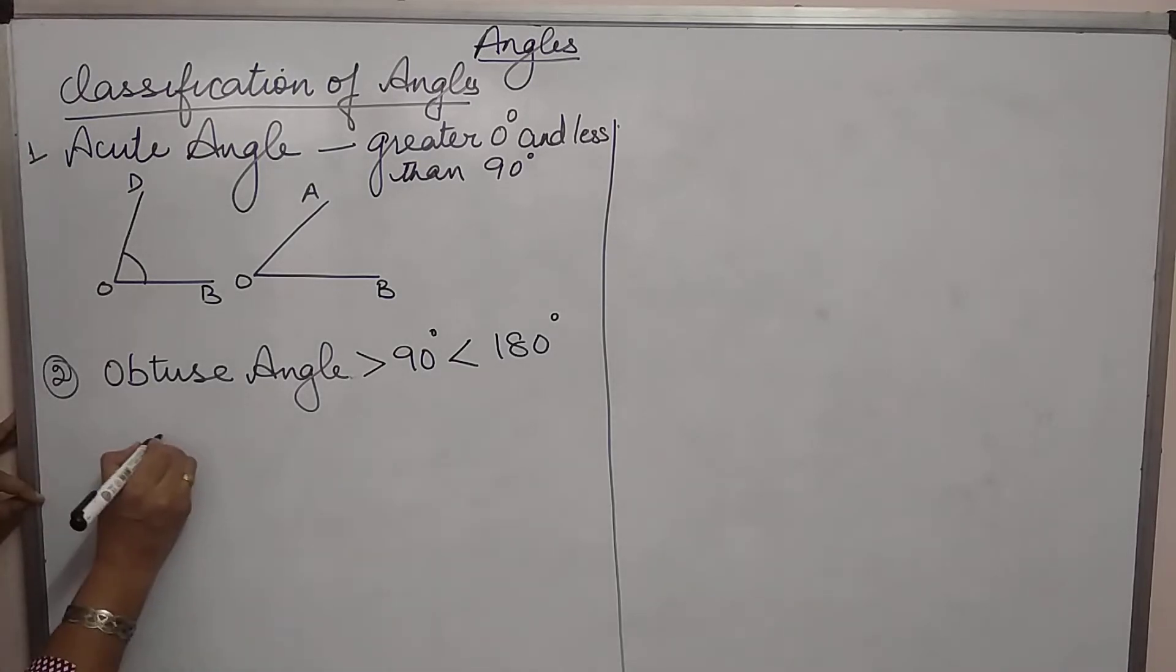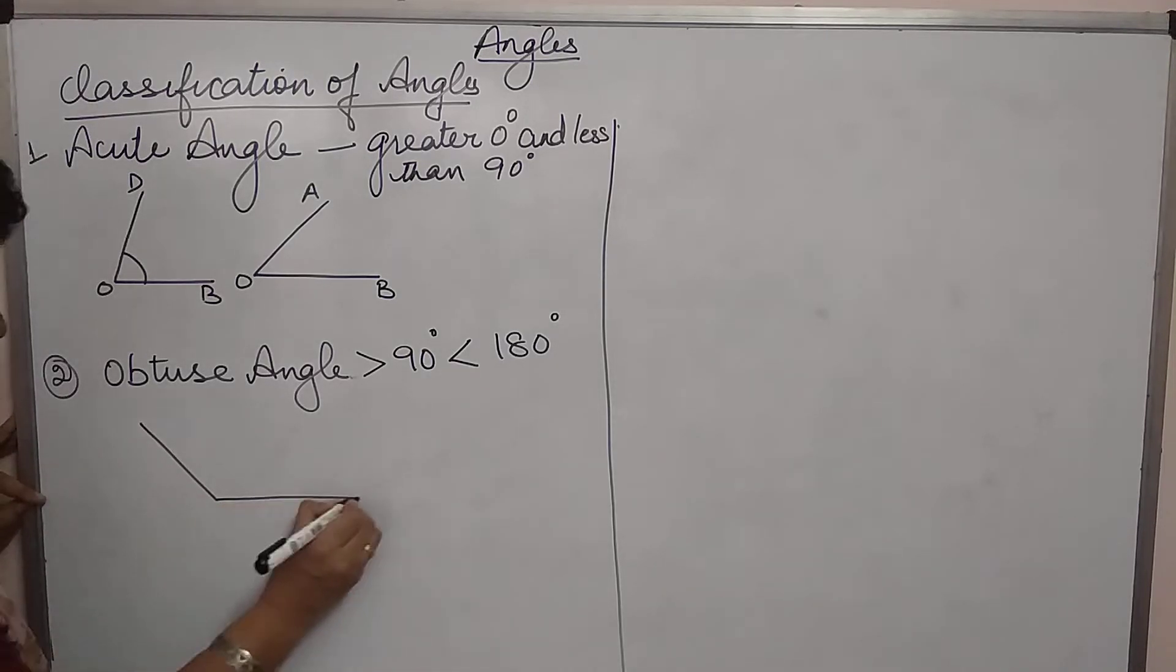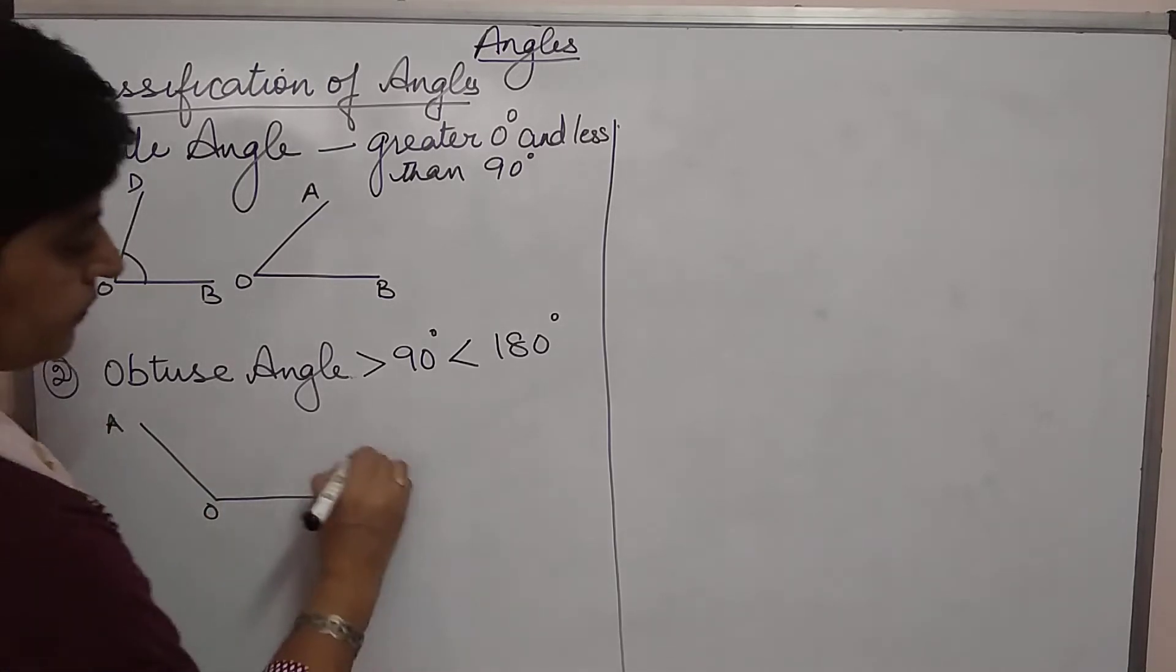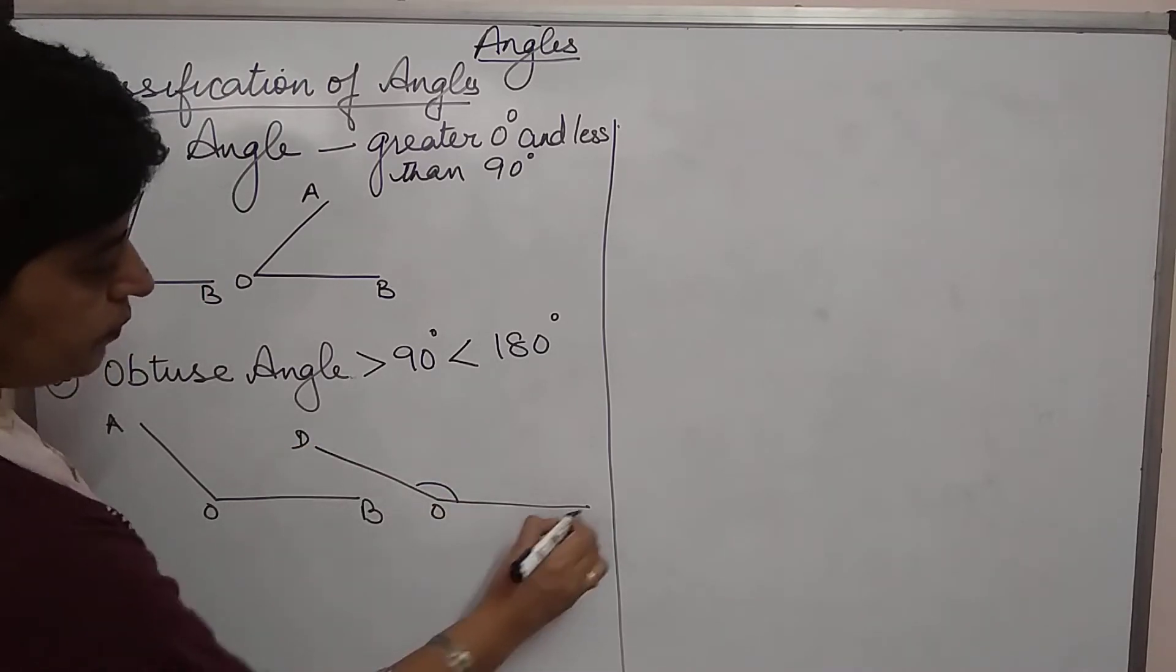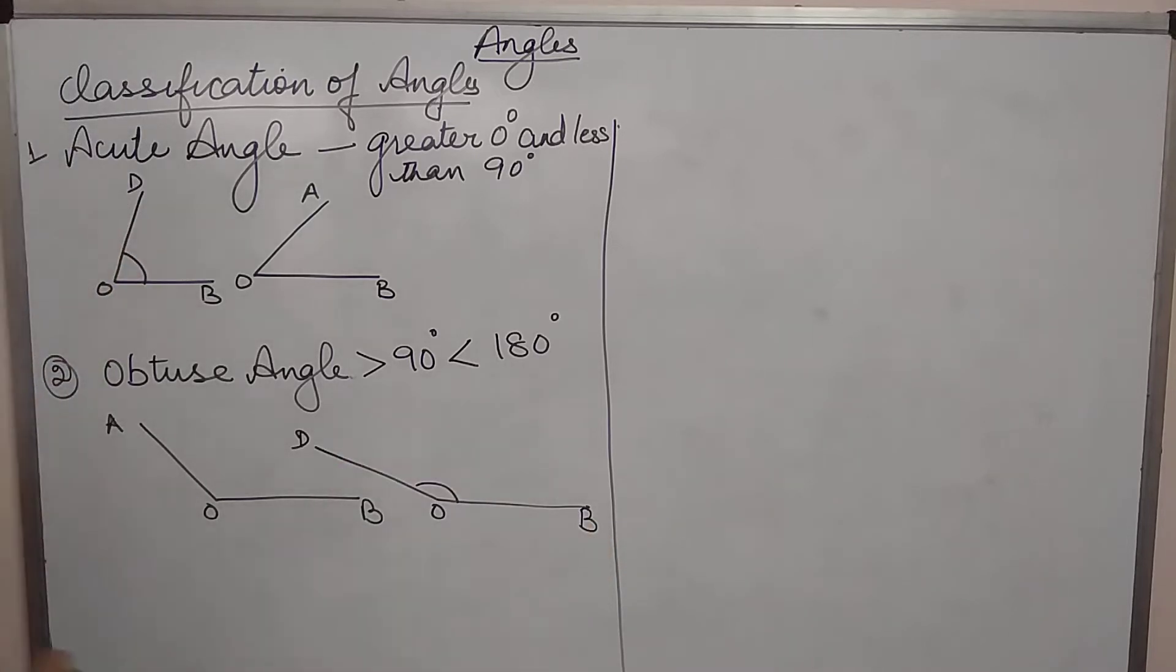So, obtuse looks something like this. And the angle AOB is obtuse. This is also obtuse and the angle DOB is also obtuse.